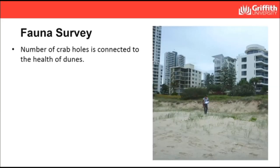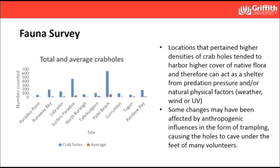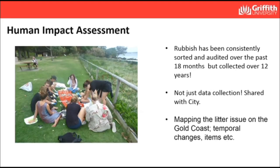For our fauna survey, the number of crab holes is directly connected to the health of the dune system, so we go through and count crab holes. We use averages rather than raw data because when you look at the raw figures you see significant discrepancies — you might count six crab holes one visit and 50 six weeks later, due to simple human counting errors or differences in the locations being surveyed.